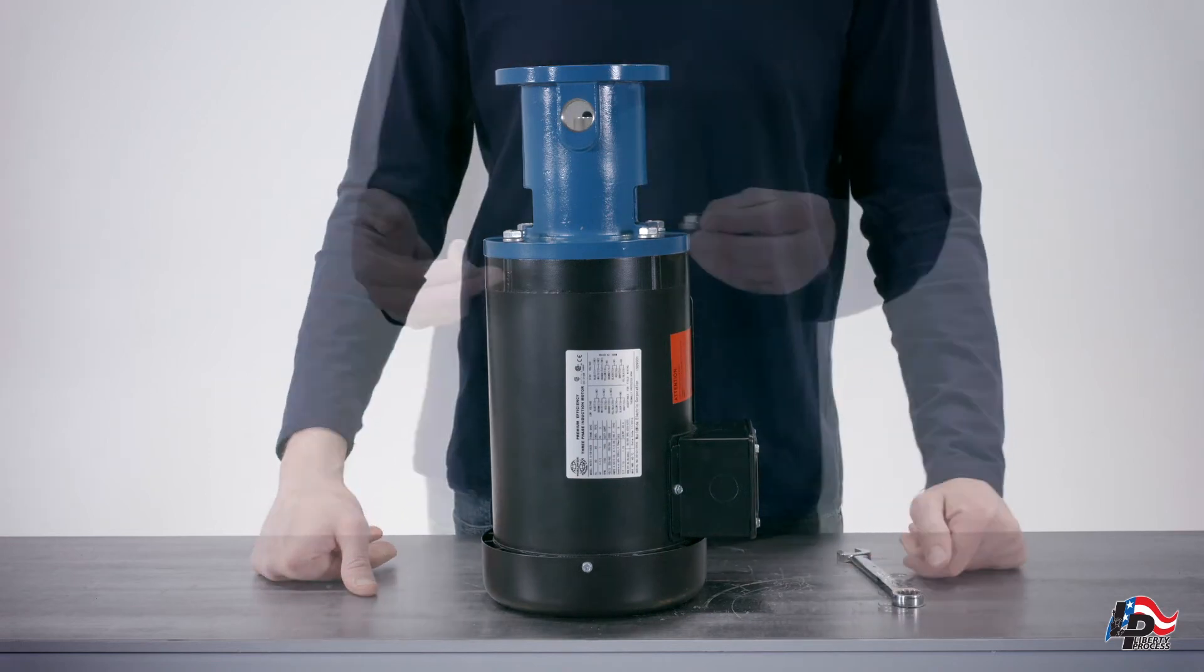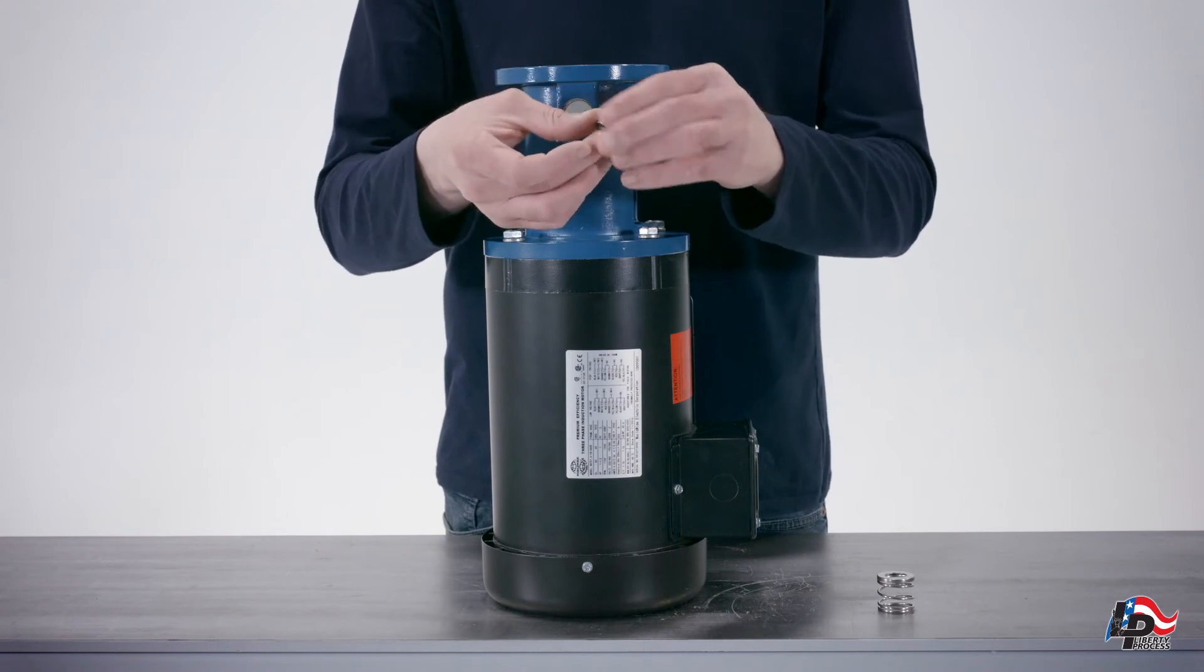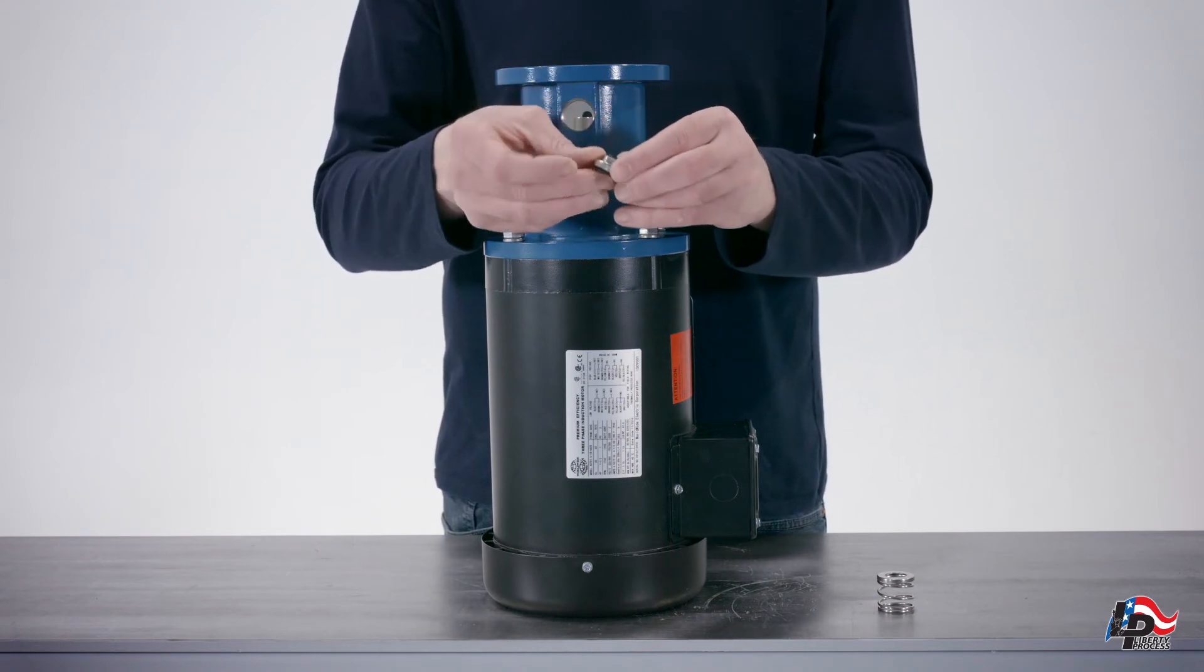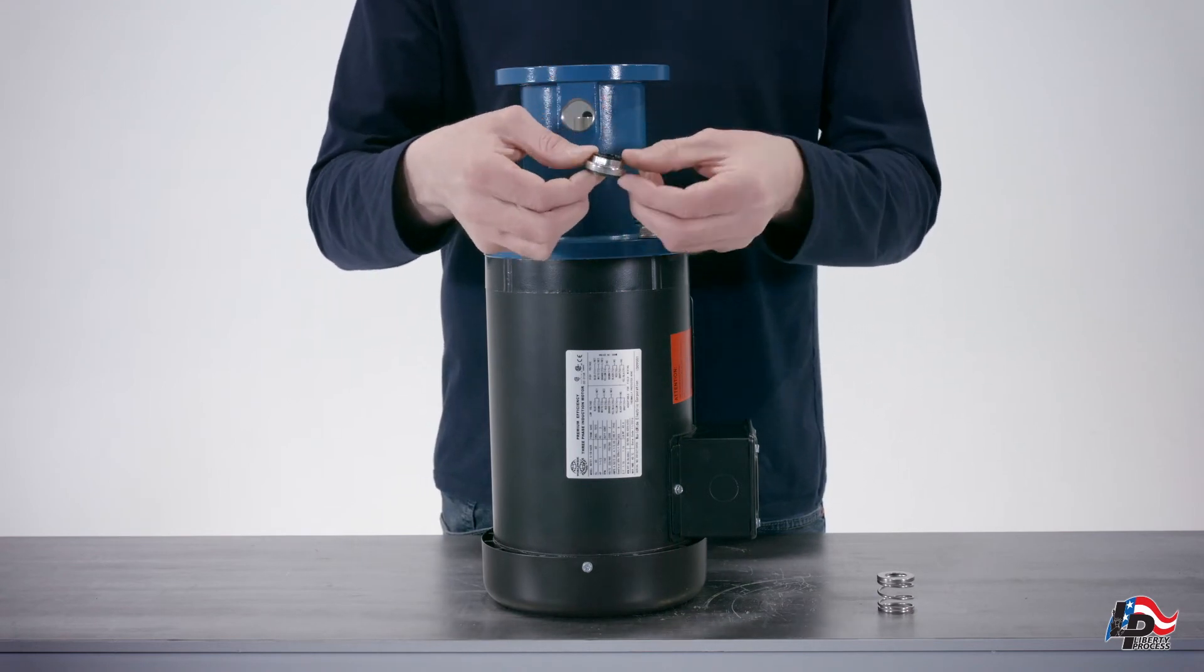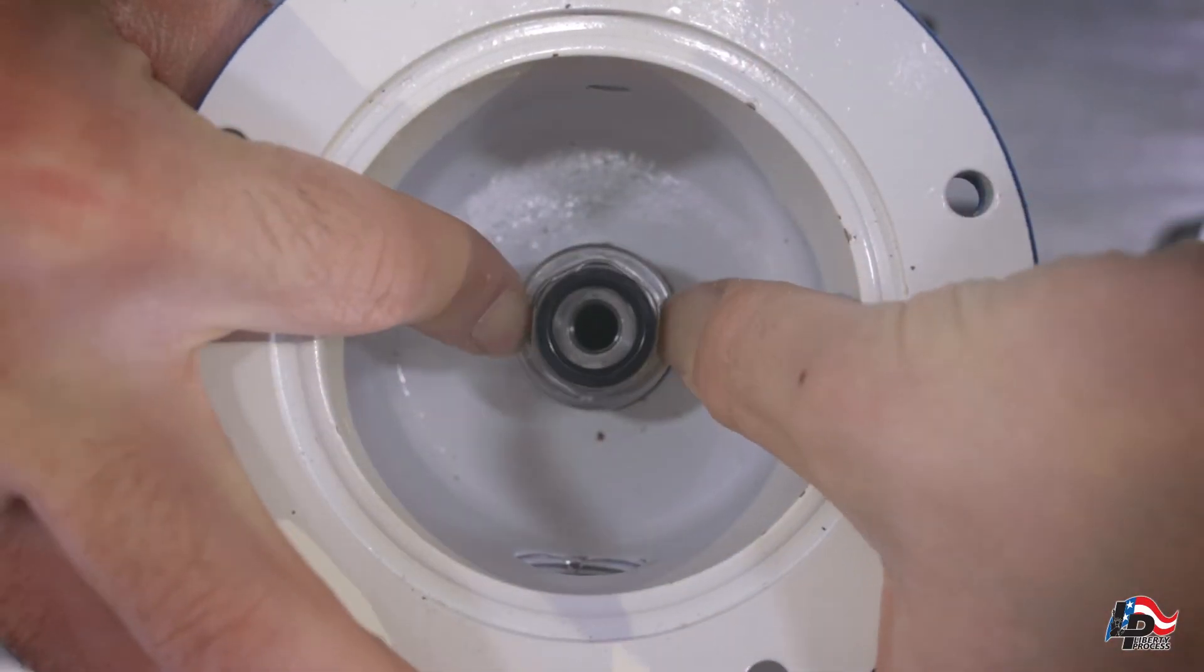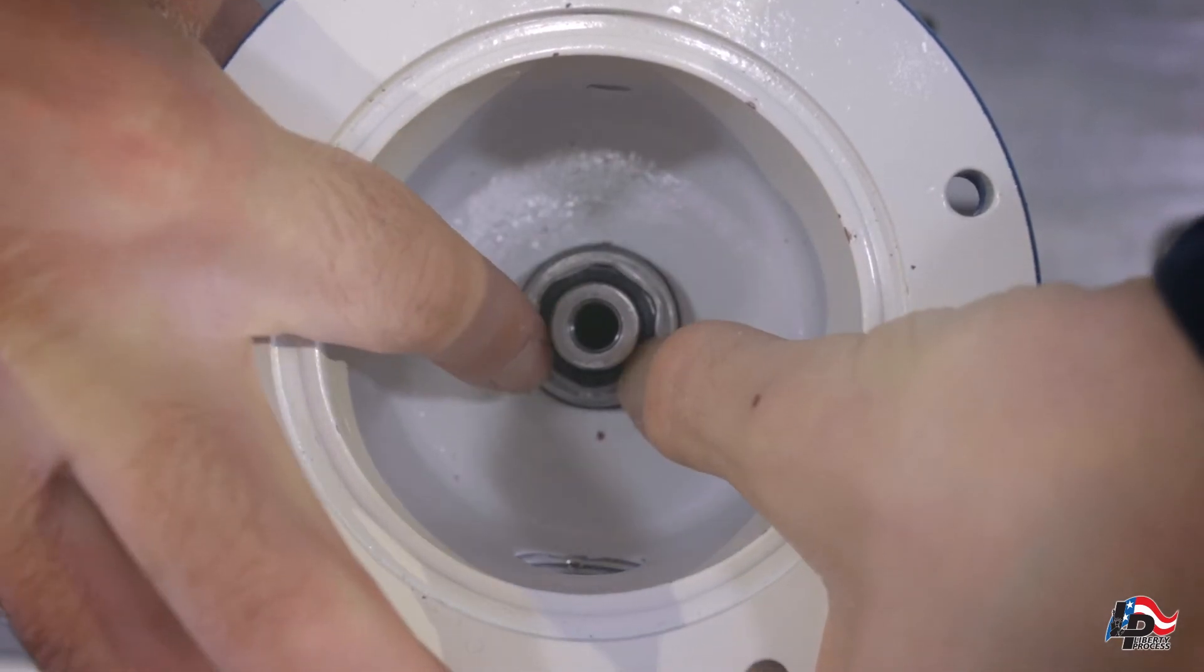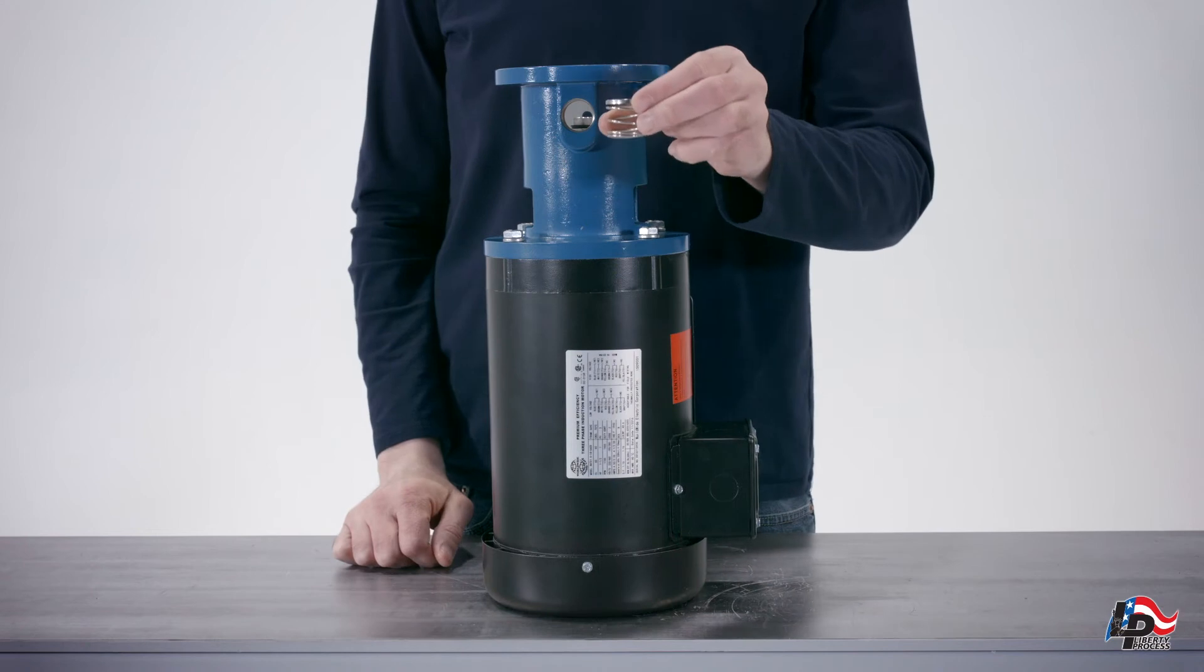Install the rotating face of the mechanical seal onto the stub shaft by lubricating the stationary face of the mechanical seal, then sliding the rotating face onto the stub shaft. Now place the rotating face and spring assembly over the stub shaft.